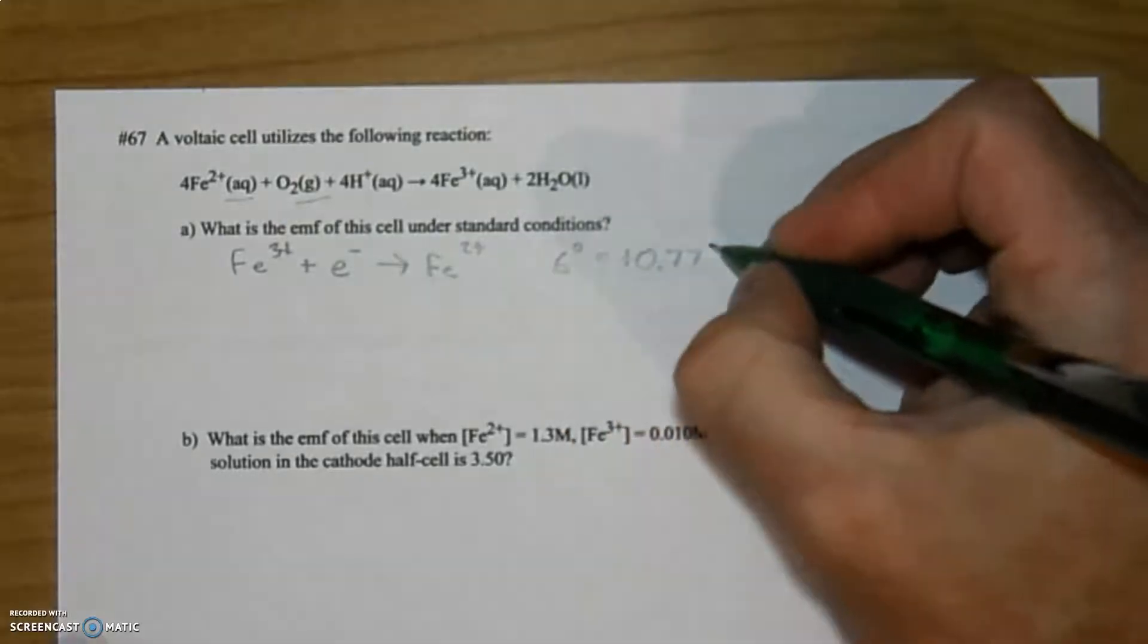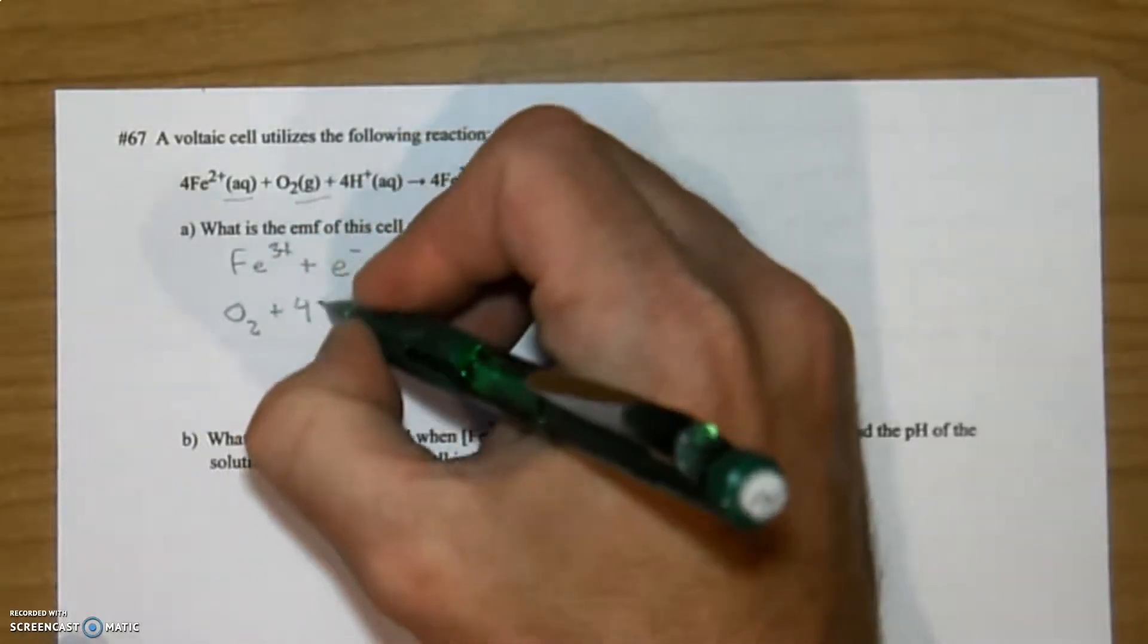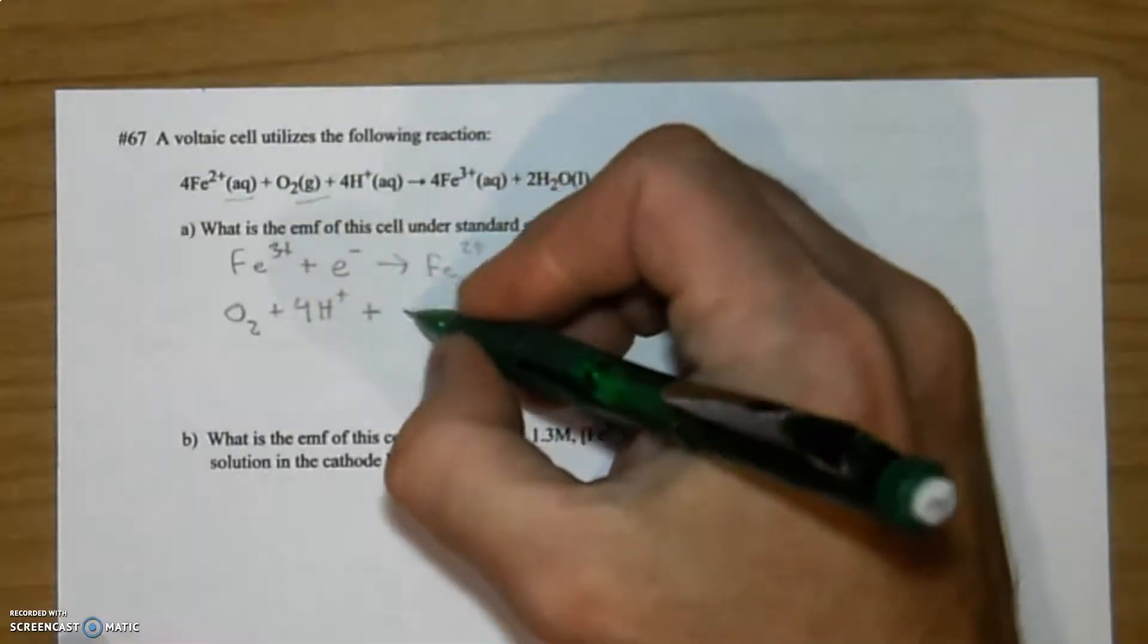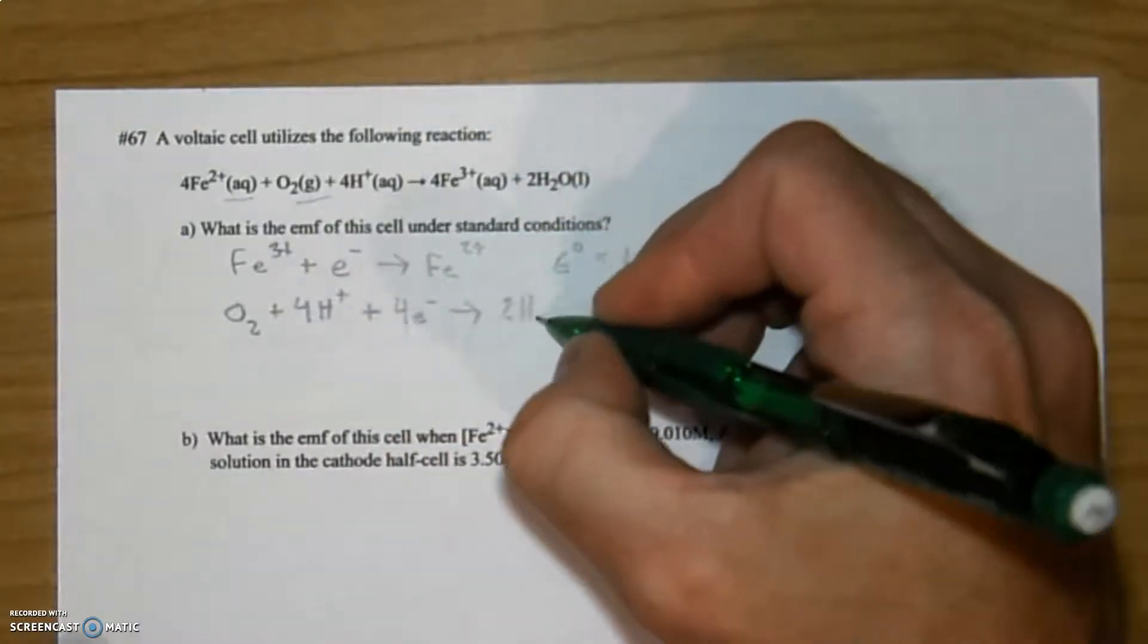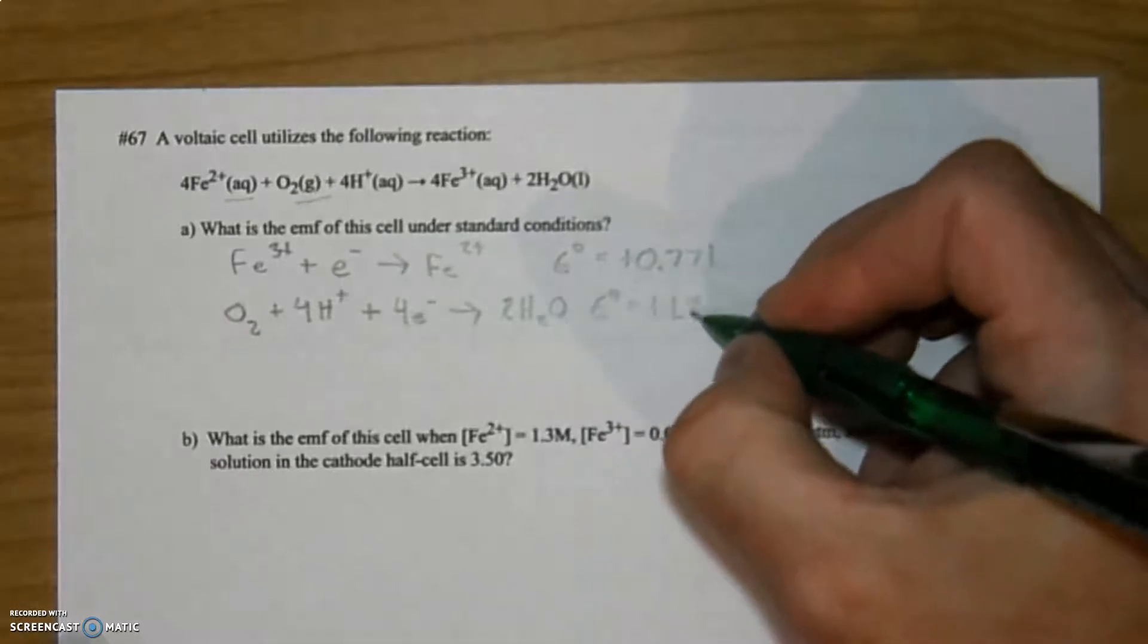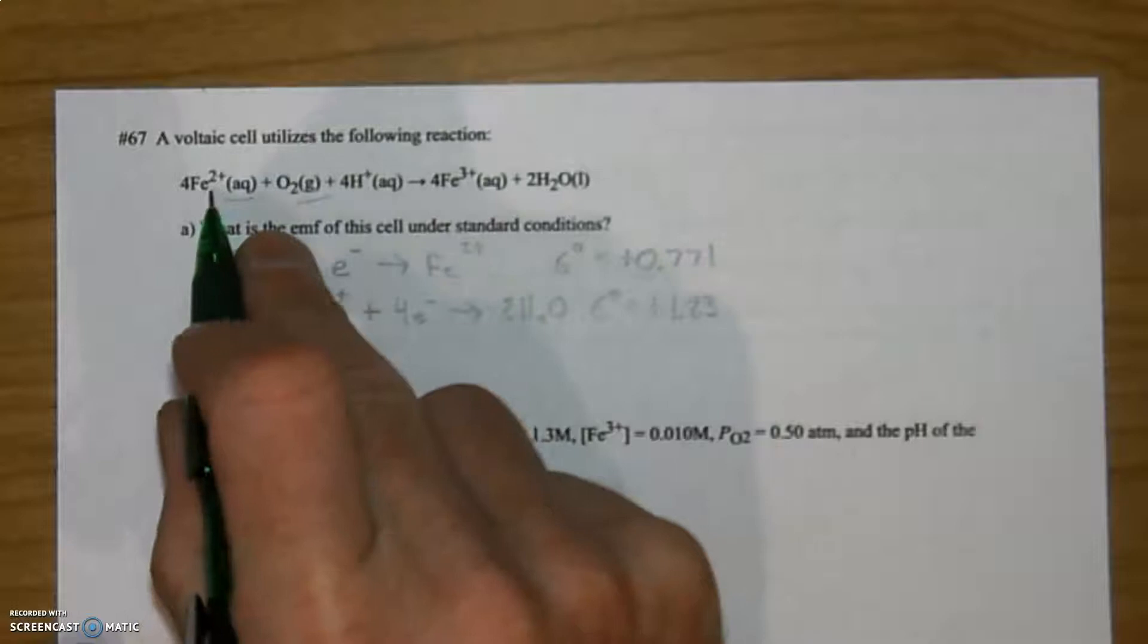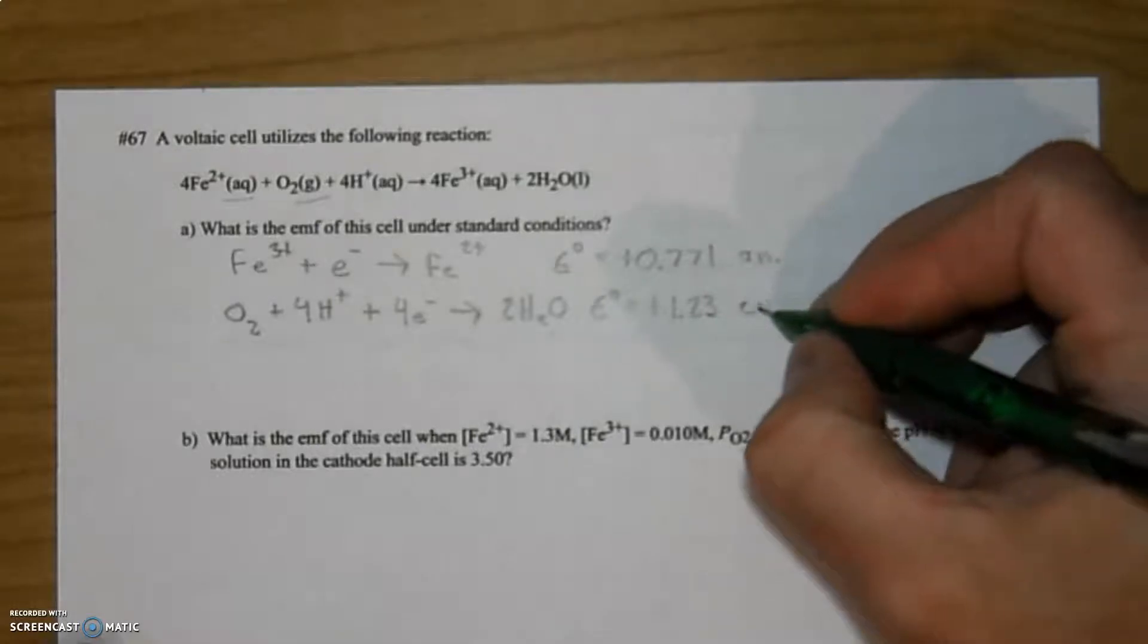0.771, it's positive. Then I can take a look for oxygen, and it's always listed in regards to an acidic solution, it forms water, and its cell potential is positive 1.23. Based upon how this reaction is actually going, who's gaining and who's losing, this is going to be losing an electron which is oxidation so that'll take place at the anode, and this would therefore be taking place at the cathode.